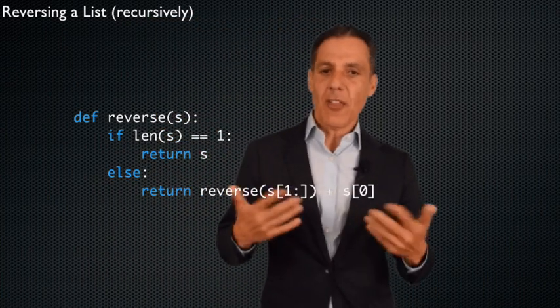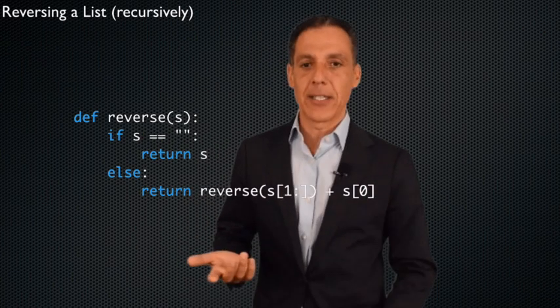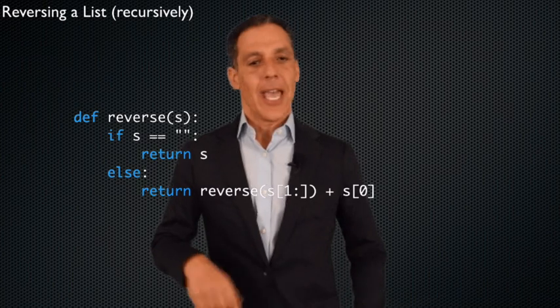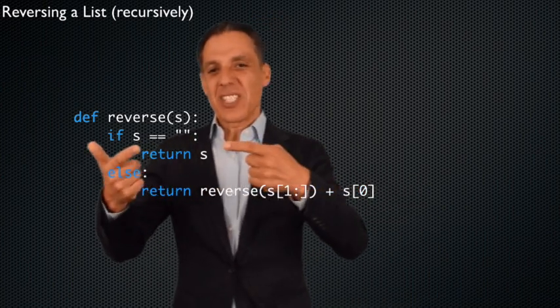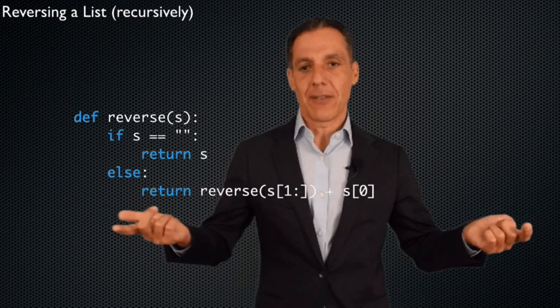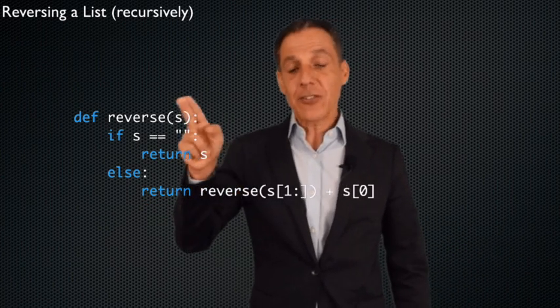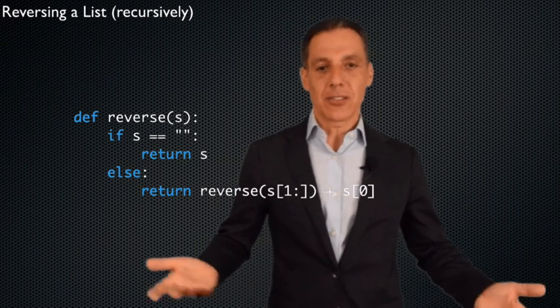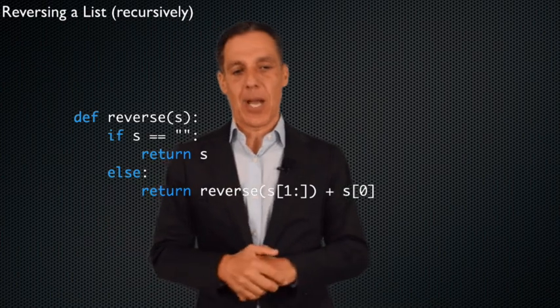There's also another base case worth noting: you could have the base case be the empty string, and it would work just fine — you'd eventually hit the empty string. A list with a single character's reversal is itself, but handling the empty string is nice in case somebody passes you an empty string. That is the second recursive example we've done. The code looks different, and you have to think differently about the problem — it forces you to think about the nature of computation in a really fundamental way. We'll do a couple more examples when we come back.